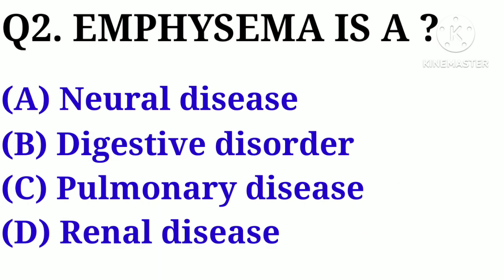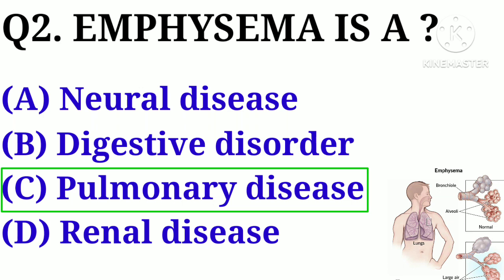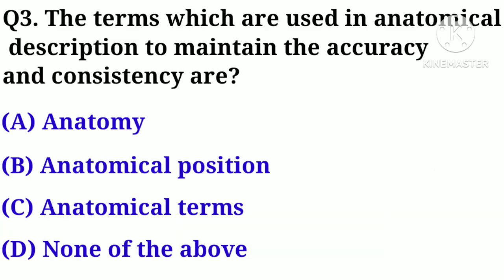Question number 2. Emphysema is: Option A. Neural Disease, B. Digestive Disorder, C. Pulmonary Disease, D. Renal Disease. Correct answer: Option C. Pulmonary Disease.